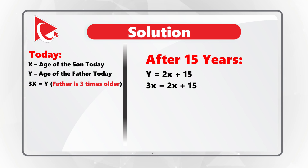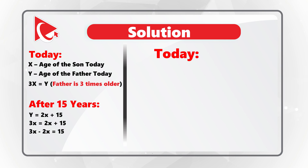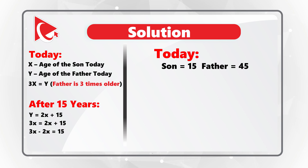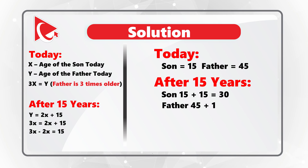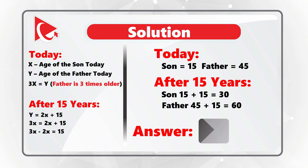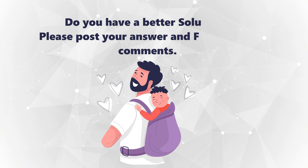Once we simplify, 3x minus 2x will equal 15. After completing the calculations, x equals 15 and y equals 45. Based on this, today's age of the son is 15 years old, which means that after 15 years, the son will be 30 years old and the father will be 60 years old. Hopefully you've nailed this question and now know how to answer similar age problems on the test.